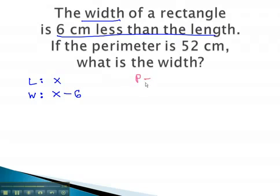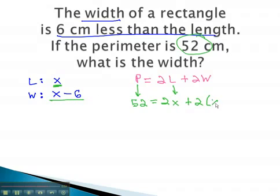Again, we go to the perimeter formula, which equals 2 lengths plus 2 widths. Replacing each variable with what it represents: P, the perimeter, is 52, equals 2 times the length, which we just labeled as x, plus 2 times the width, which we just said was x minus 6.